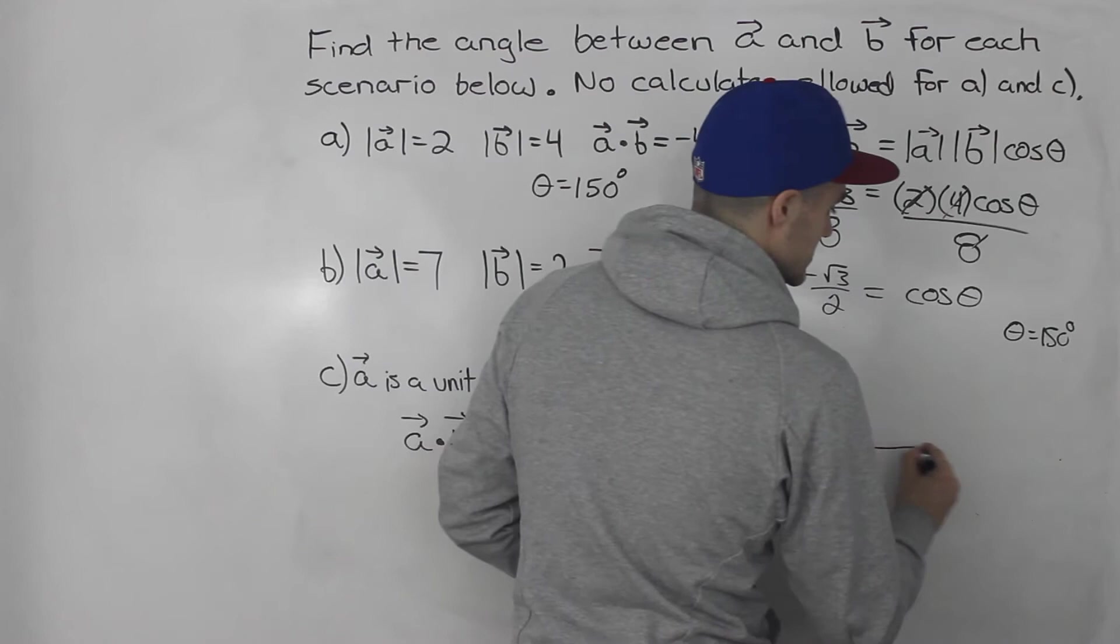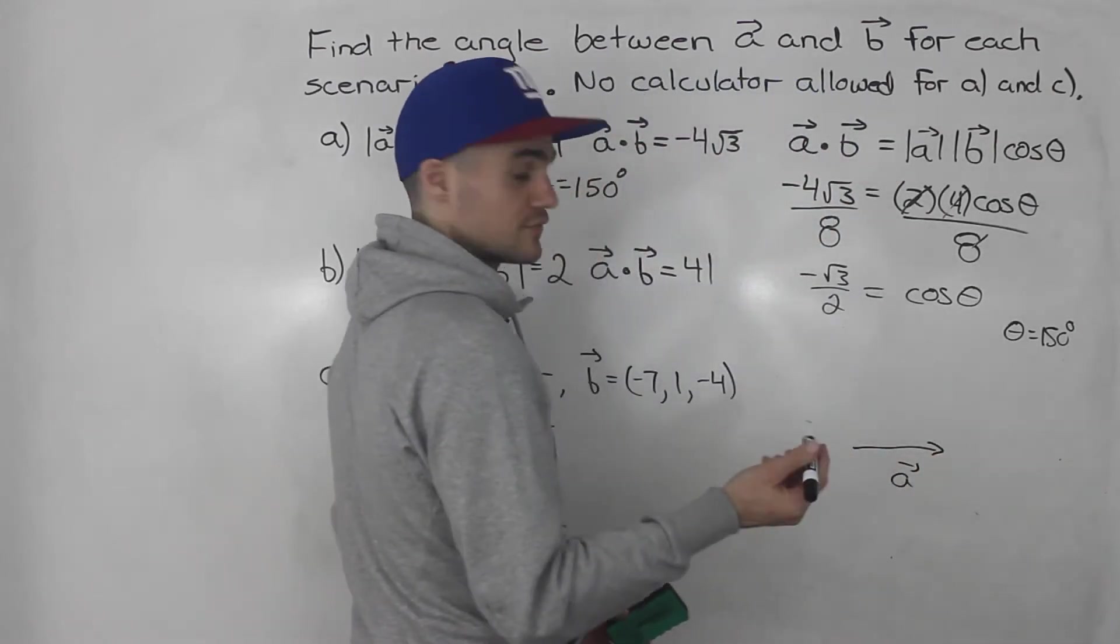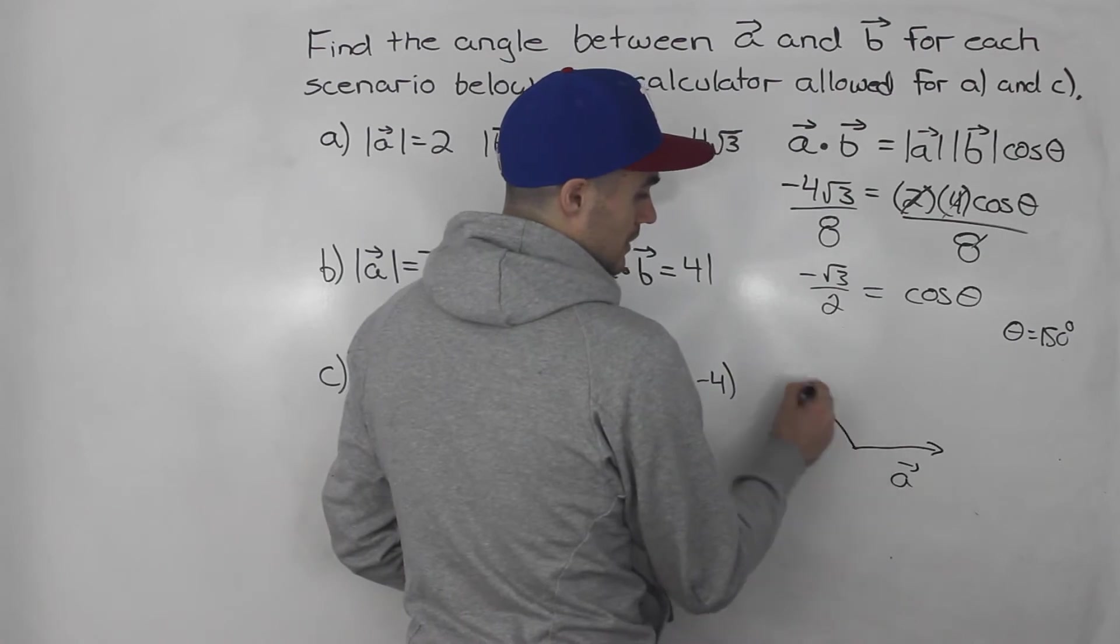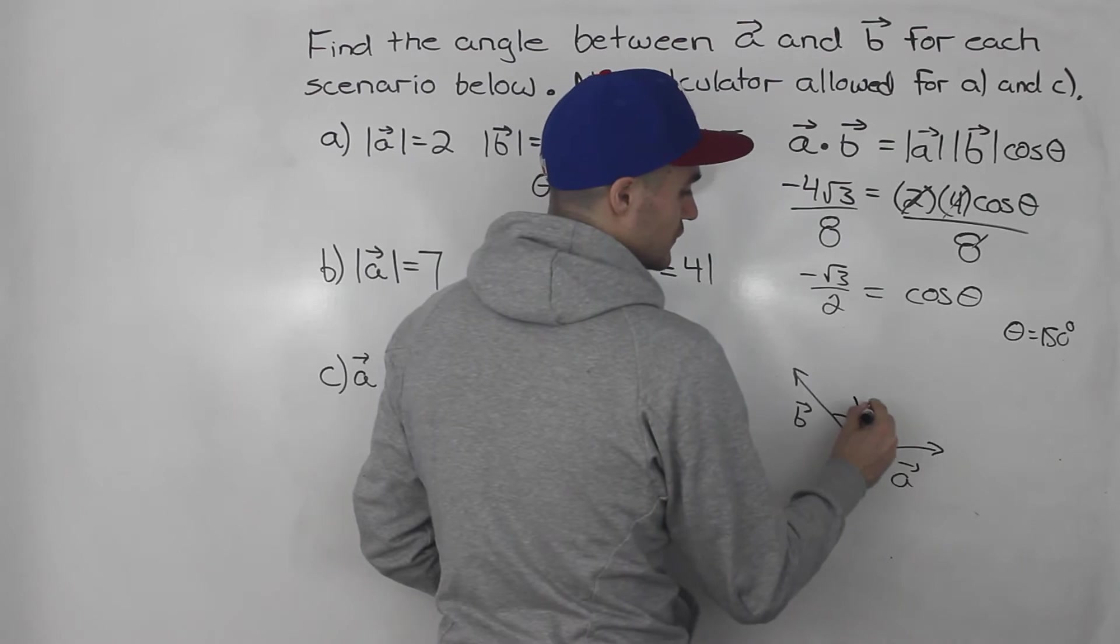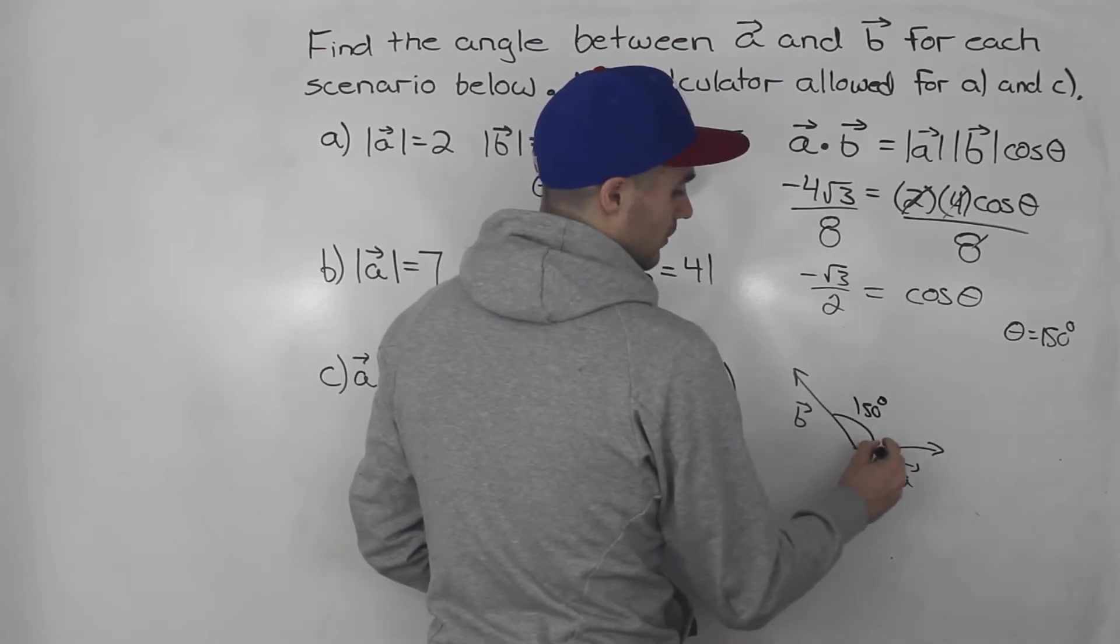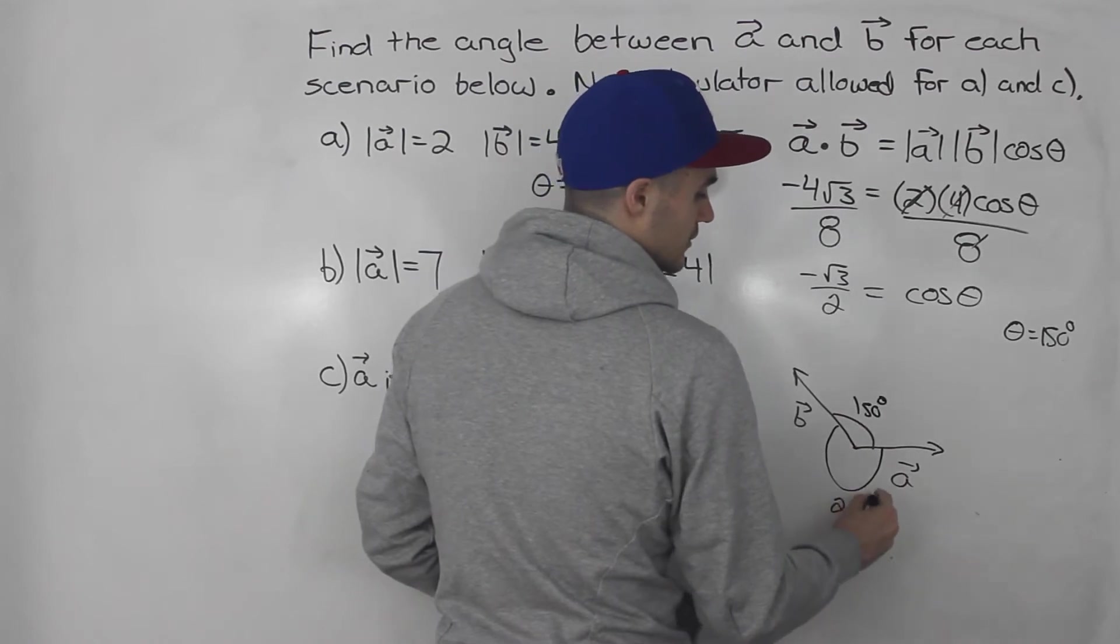Because let's say that we draw these vectors out, a and b. So let's say vector a is here, and then if there's an angle of 150 degrees between them, then maybe vector b is going to be right there. So that's going to be 150 degrees.